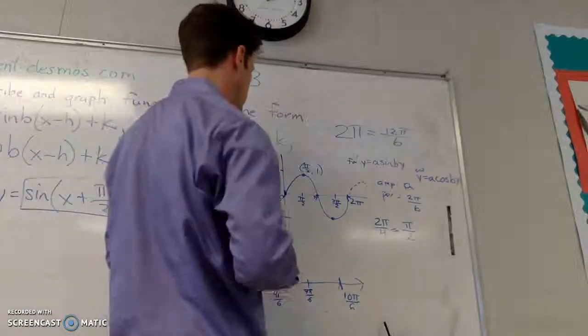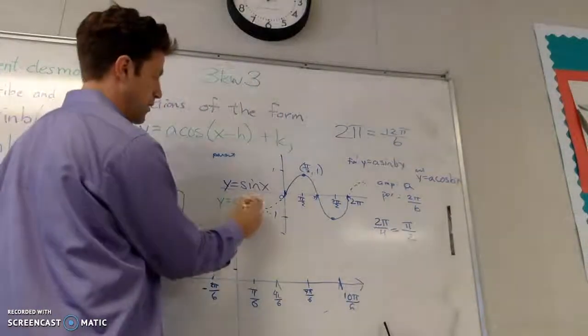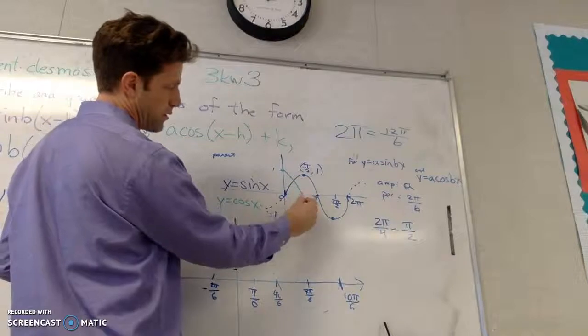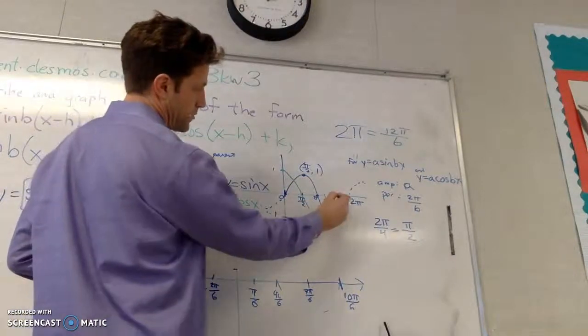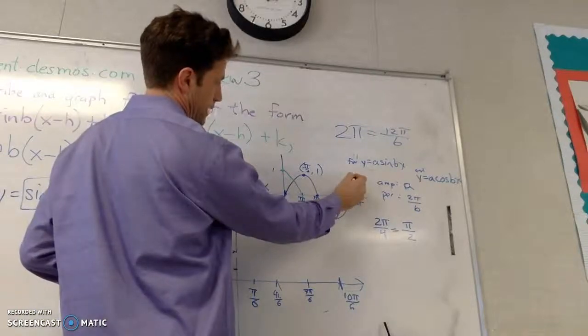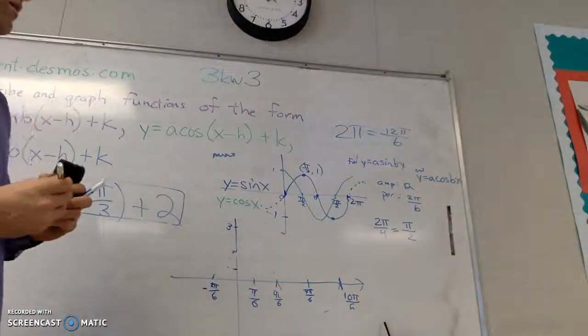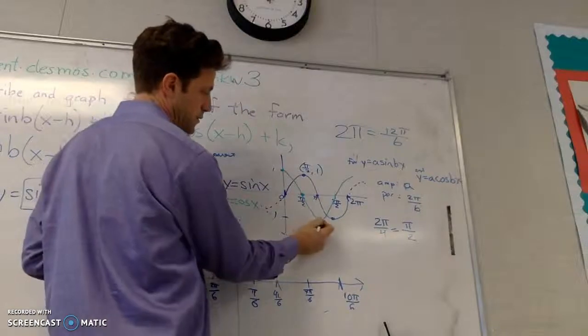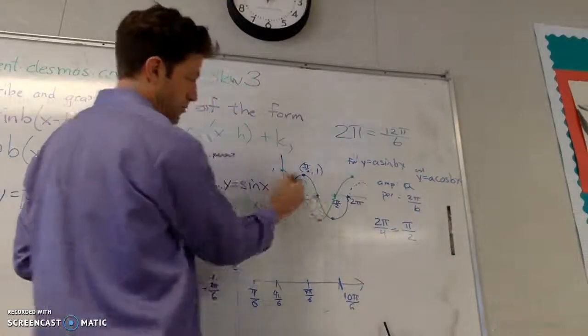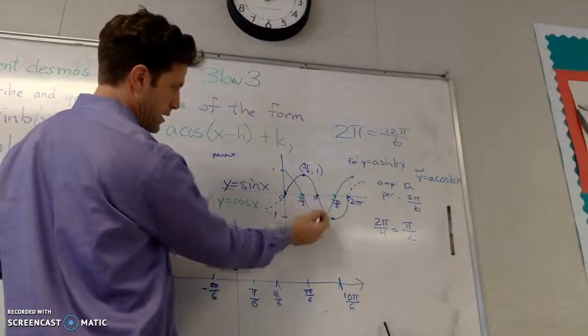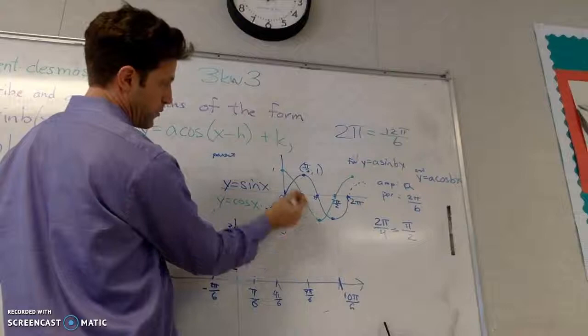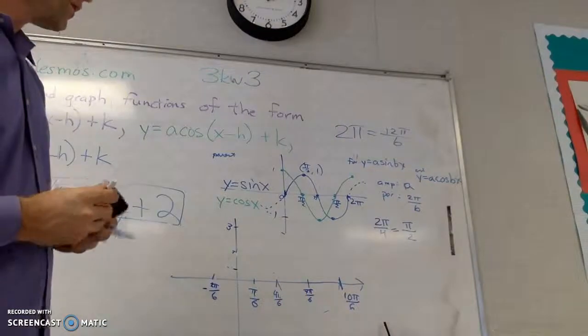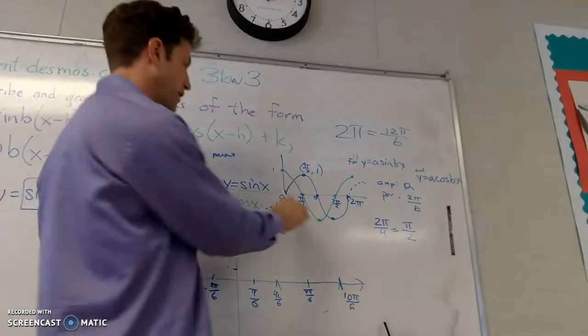For cosine x, the same intervals, but it starts here, goes down here, it's bottom here, it's back up here, comes back around here. And again, like sine x, it goes on forever, but you want to know just those values. And we can name any of those points now. What's the minimum? It's a pi negative one. What's the maximum? Well, it's a zero, one, or you can say it's a two pi one. And its zeros are pi over two and three pi over two.